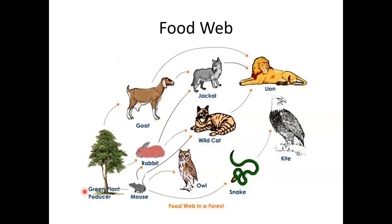Remember, this follows the 10% rule: 100% plants, then 10% primary consumers, 1% secondary consumers, and then a fraction of your tertiary consumers.